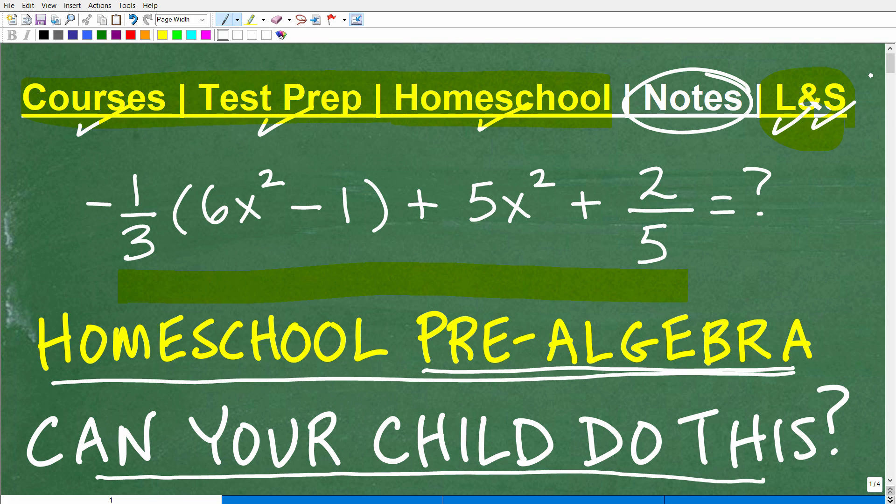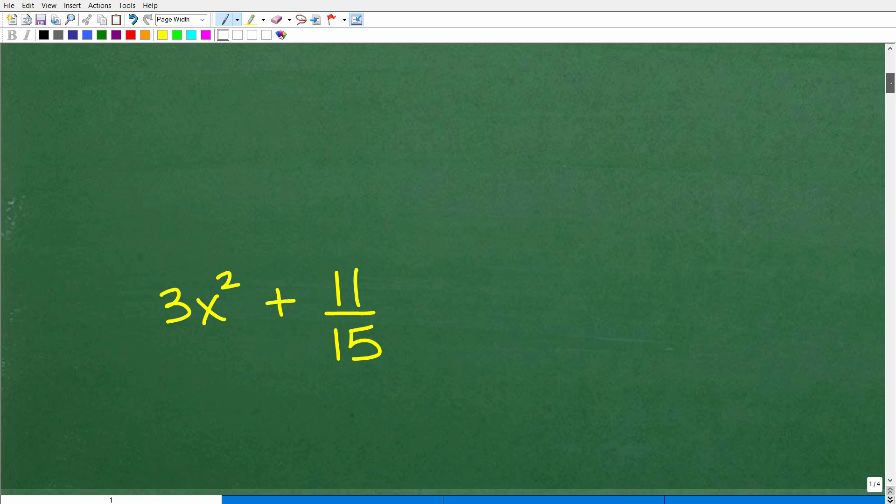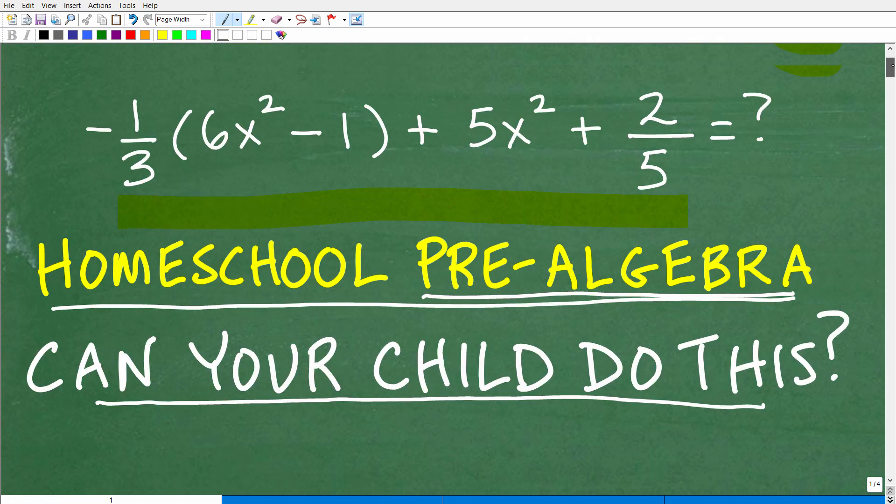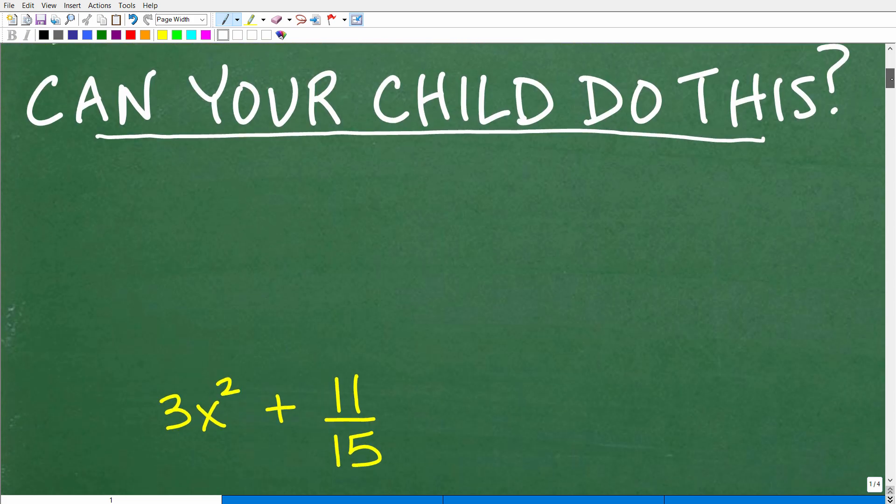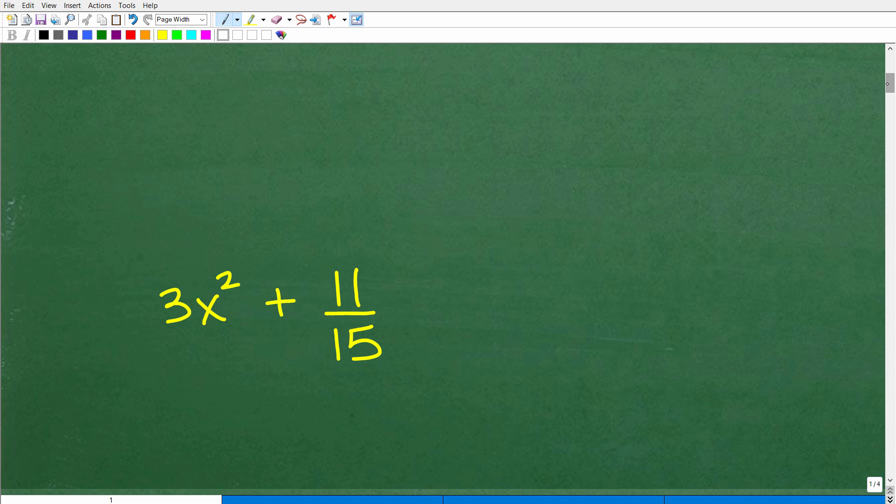Okay, so let's go ahead and take a look at the answer to this question. And the answer is this: 3x squared plus 11 over 15. So again, what we wanted to do was to simplify this expression. And if you did this correctly, this is what your child should have gotten.